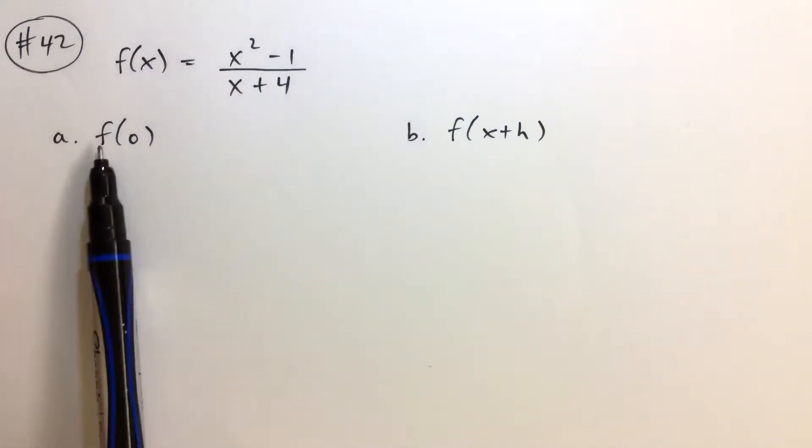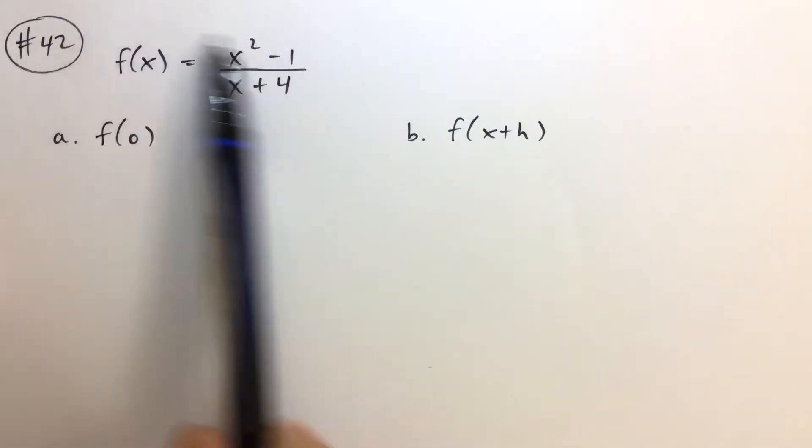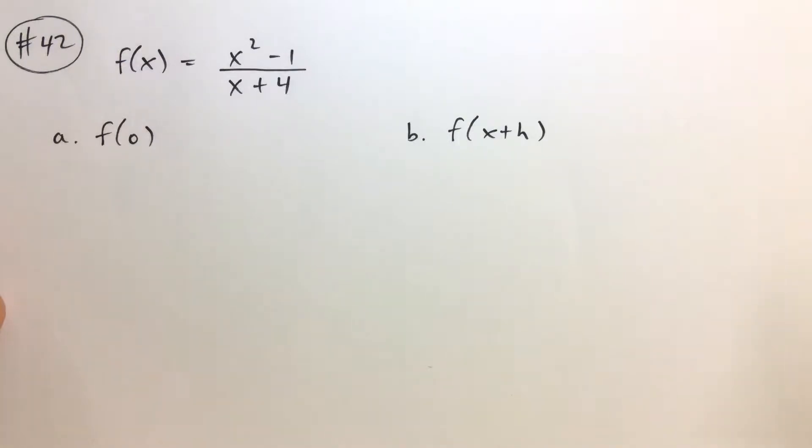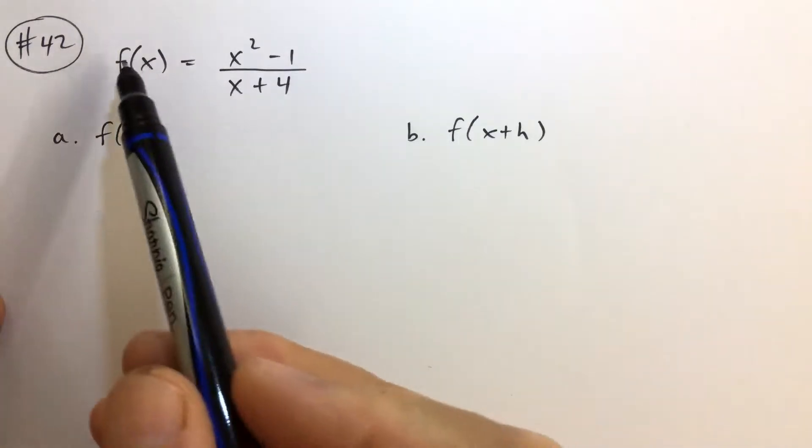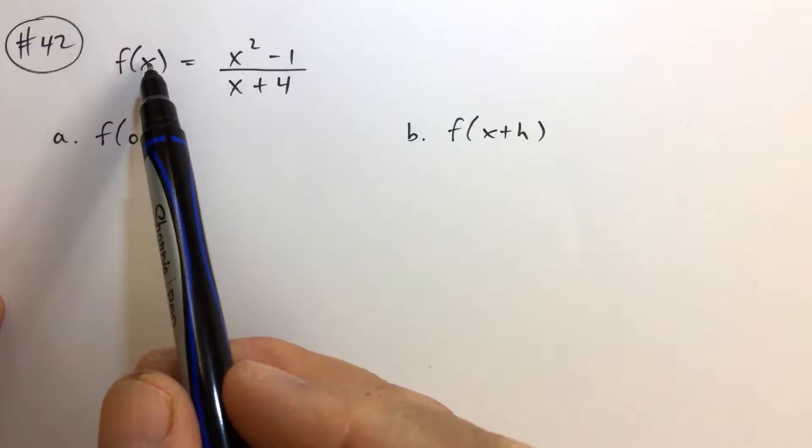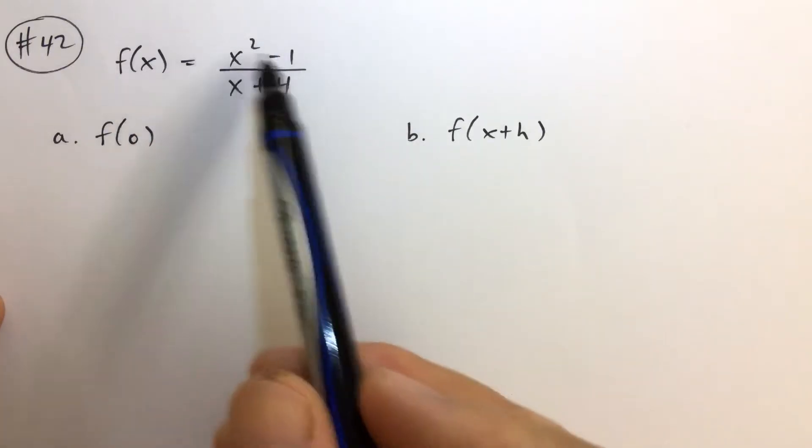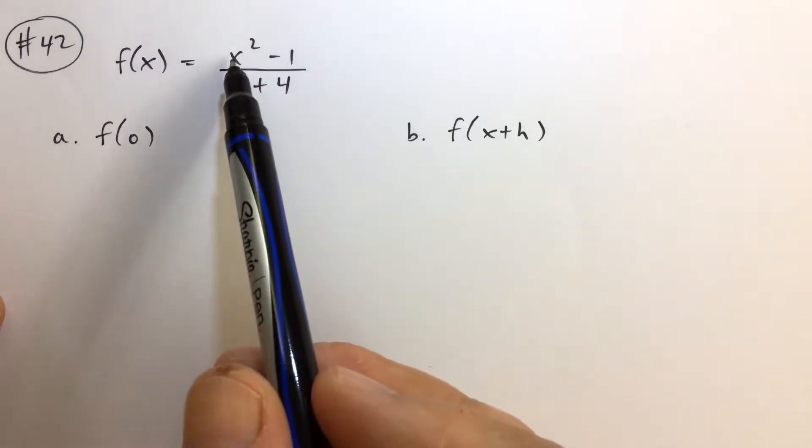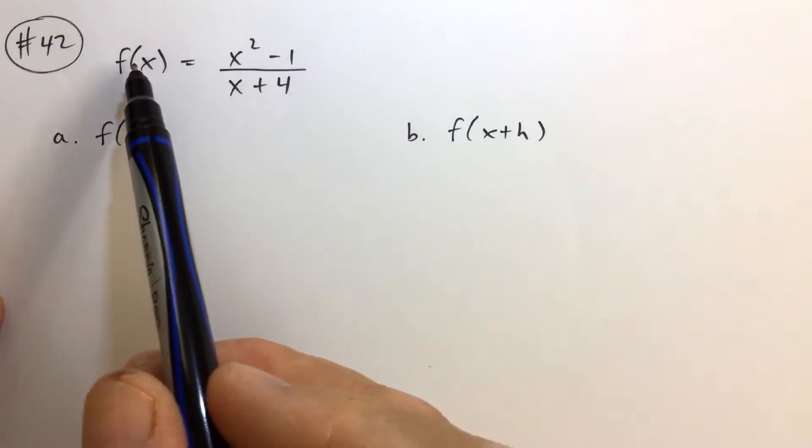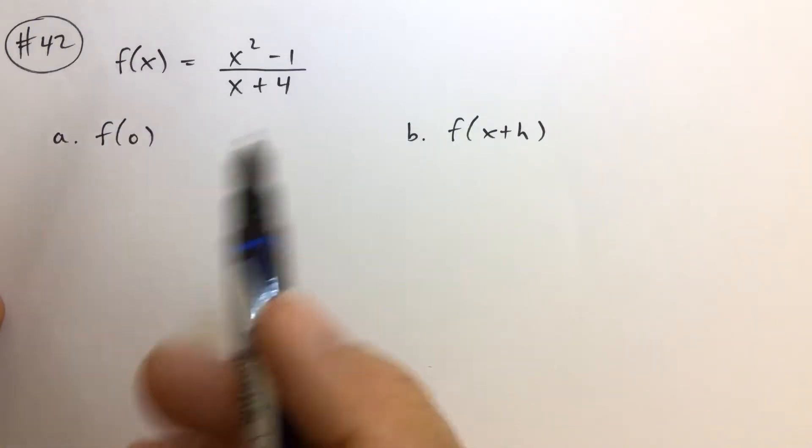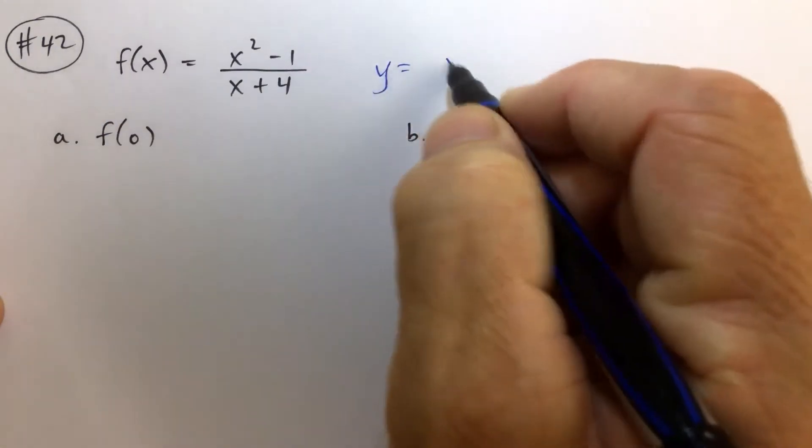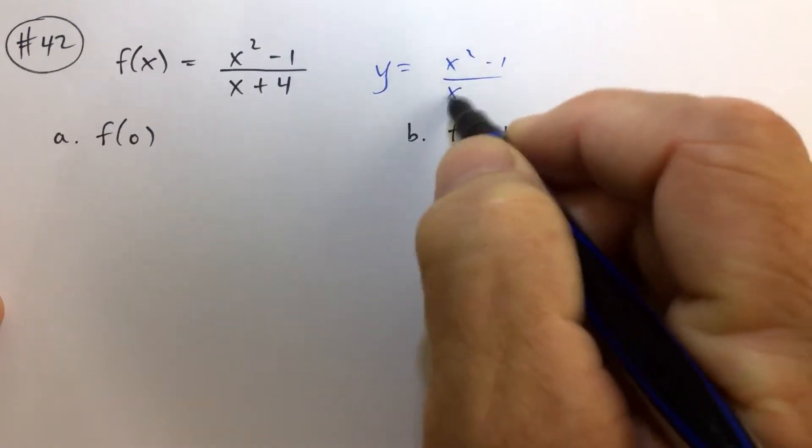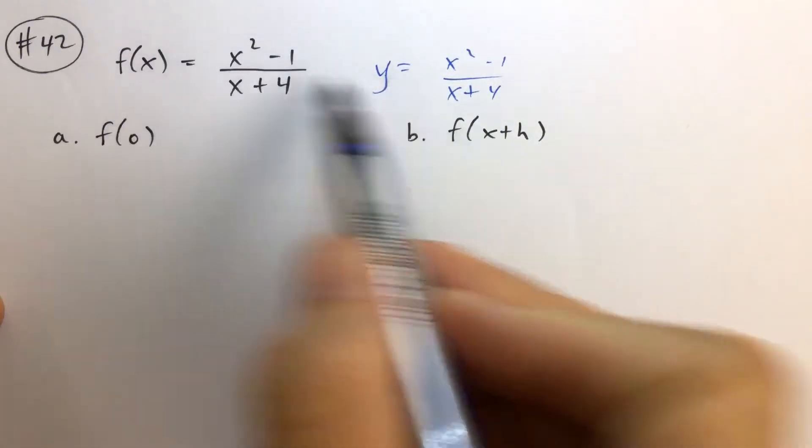So for problem 42, really understanding the function notation is the goal of this video. And we've seen these kinds of things before. f of x equals this, something over here, and we put something in for x and we find what the value of y is. So sometimes we see y equals x squared minus 1 over x plus 4. These two mean the same thing.